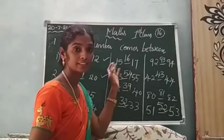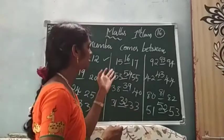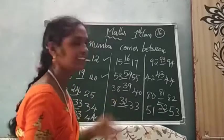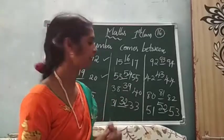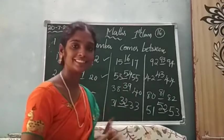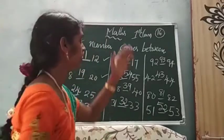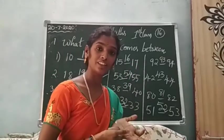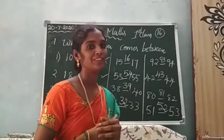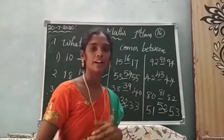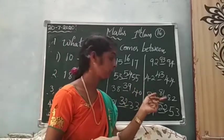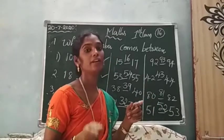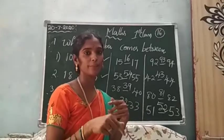15 and 17 — between the number? 16. 53 and 55 — between the number? 54. 38 and 40 — between the number? 39. 31 and 33 — between the number? 32. 92 and 94 — between the number? 93. 42 and 44 — between the number? 43. 80 and 82 — between the number? 81. 82 before the number? 81.